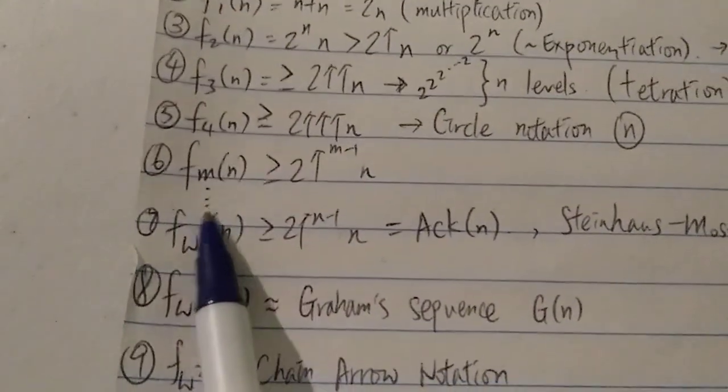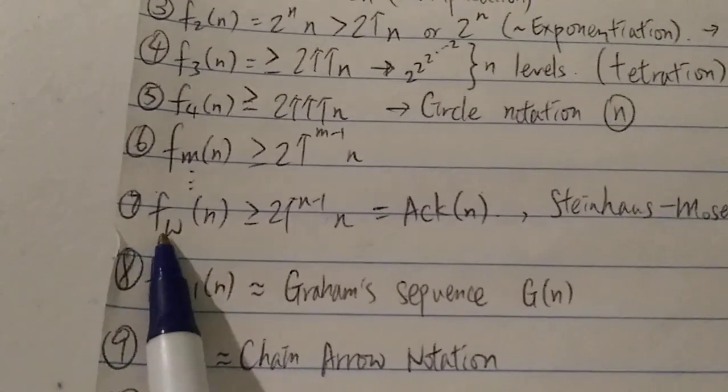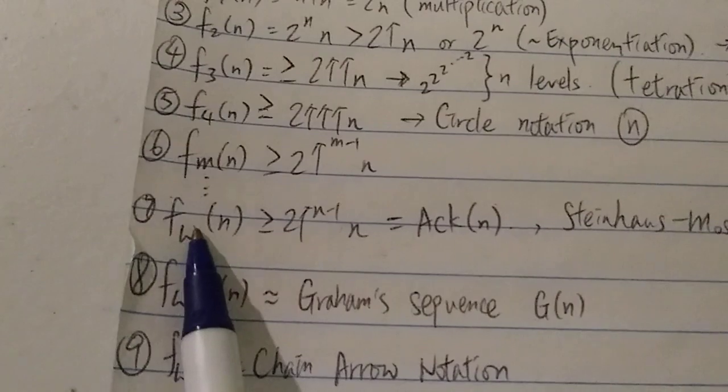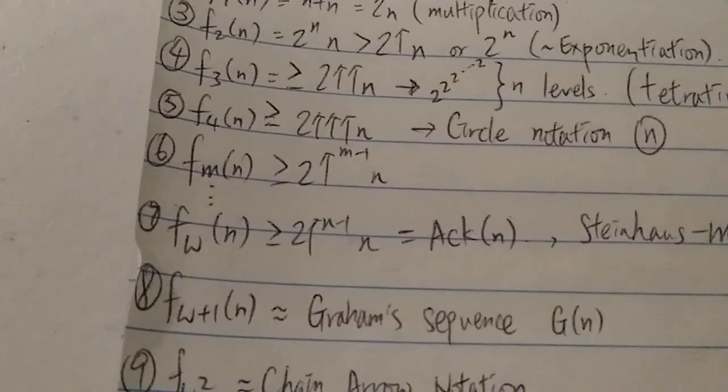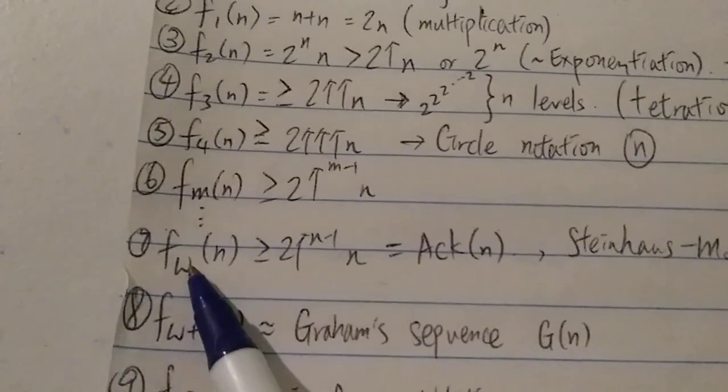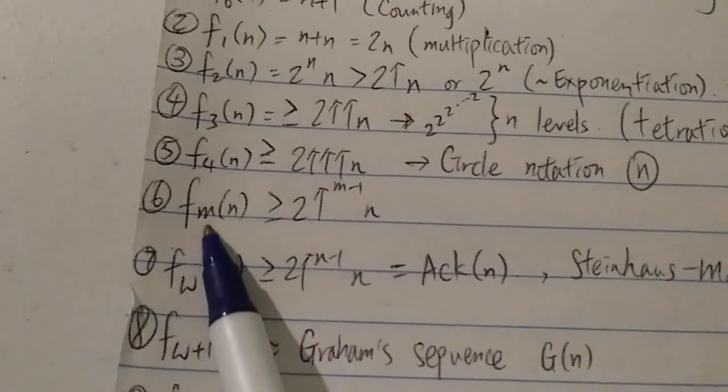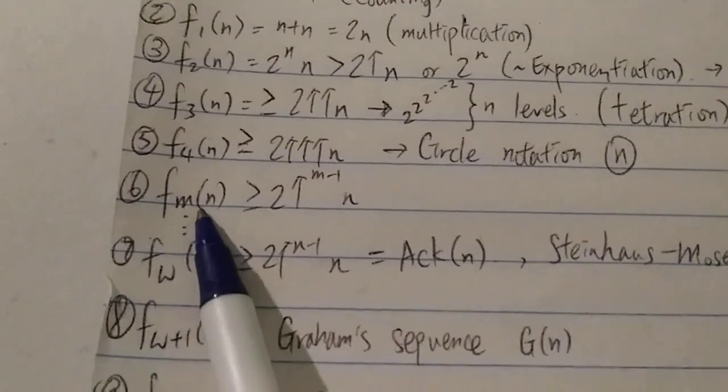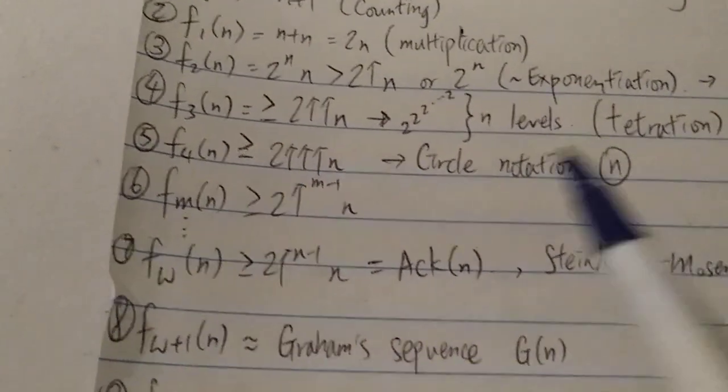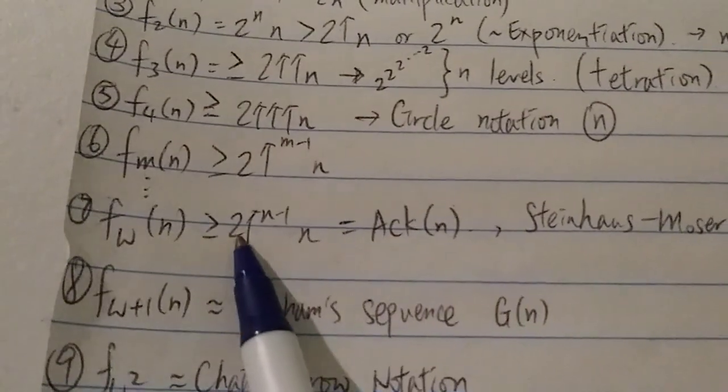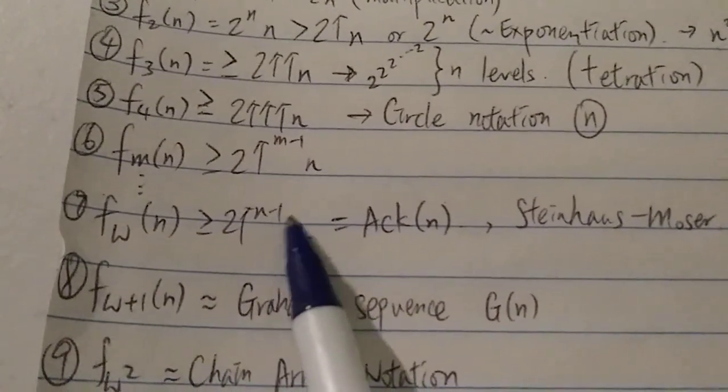And next, we have F_ω(n). And omega, of course, we know that is kind of infinity over here. So F_ω(n) grows faster than any Fm, including F_Graham's(n) or F_3↑↑↑↑3(n). The reason is that F_ω(n) is greater than 2 with n-1 arrows, n.